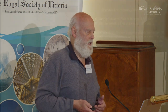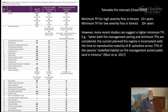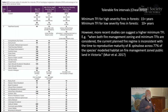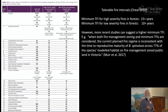A more recent study by Muir looked at one particular species, Banksia spinulosa, and found that the minimum tolerable fire interval for that species was actually greater than had been previously assumed. So when you start delving into individual species, you find that these minimum tolerable fire intervals may actually be greater than the ones we currently accept.